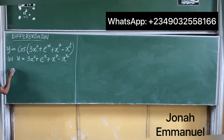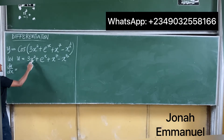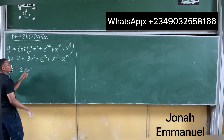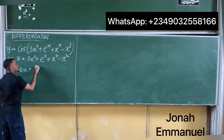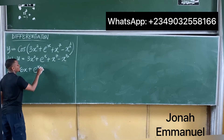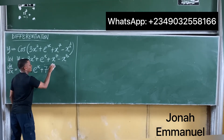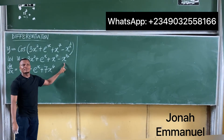If I differentiate this, I will have that du over dx is equal to 6x plus the differential of exponential x, plus — please differentiate x to the power 1 over 2. What do we have?